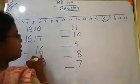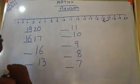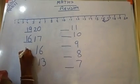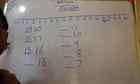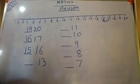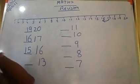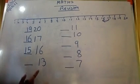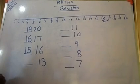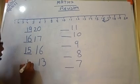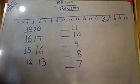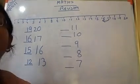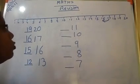16's before number will be 15. 16 before number will be 15. Here it is 13. 13's before number will be 12.